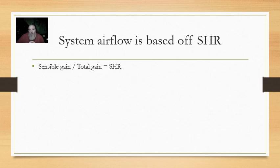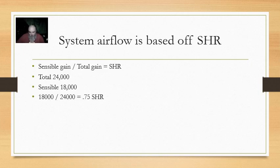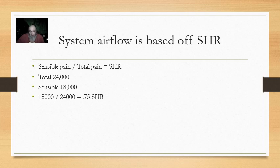Our system's airflow is going to be based off of the sensible heat ratio of the structure. To solve for our sensible heat ratio, we divide our sensible gain by our total gain. If our total gain was 24,000 and our sensible gain was 18,000, that gives us 18,000 divided by 24,000, which equals 0.75 — a sensible heat ratio of 0.75. That means 75% of the heat coming into the house is sensible, and the remaining 25% is latent — moisture, water, that stuff. A 0.75 SHR represents a house that is fairly leaky.